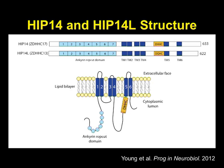HIP-14 is also part of a unique gene family within all the palmitoyl transferases, of which there are 23. It has a unique ankyrin repeat domain which binds to particular substrates, six transmembrane domains, and a classic active catalytic DHHC domain in both HIP-14 and HIP-14-like. HIP-14-like was originally described because it had around 50% sequence homology to HIP-14 and was closest in the nature of its structure and topology.